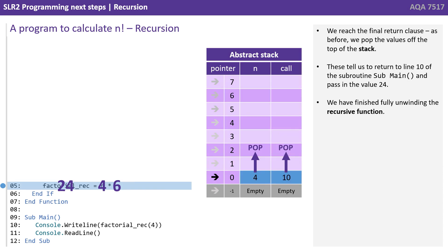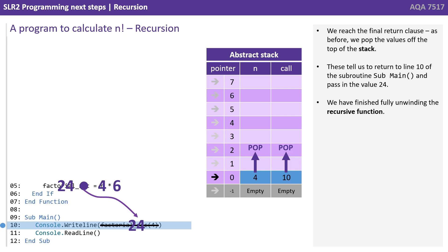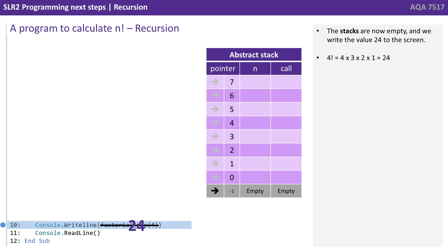We reach the final return clause and pop the values at the top of the stack. These tell us to return to line 10 of the subroutine sub-main and pass the value 24. We've finished fully unwinding the recursive function. The stack is now empty, and we write the value 24 to the screen — the result of performing factorial 4: 4 times 3 times 2 times 1.